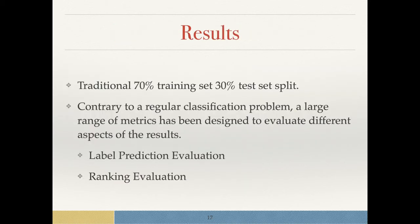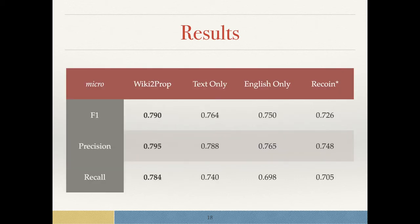We train within the traditional 70-30% training set to test set split. Contrary to regular classification problems, a large range of metrics is available for these multi-label classifications. They are the label prediction evaluation, which gives us a binary input on if a property is present, and we can also see this as a ranking evaluation.